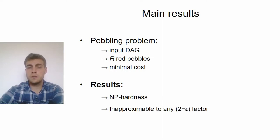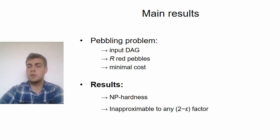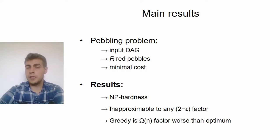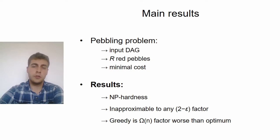And given that this is a hard problem with relevant application, our next question is whether it can be solved efficiently in practice, and we also provide some negative results in that direction. First, through a reduction from vertex cover, we show that in the one-shot model, the best pebbling cannot be approximated to better than a two-factor, if the unique game's conjecture holds. And on the other hand, we analyzed the greedy algorithm, which is a natural candidate for a heuristic to this problem, and we show that it can return solutions which are significantly worse than the optimal one.